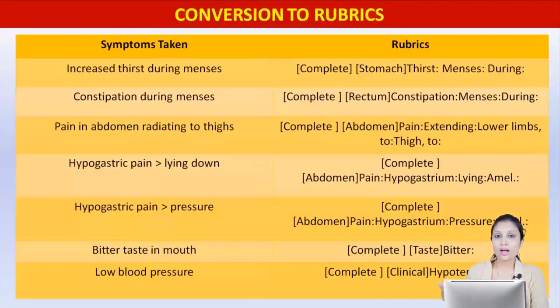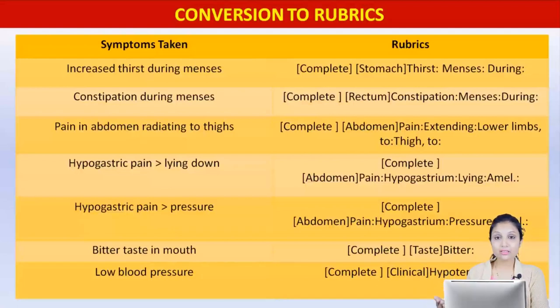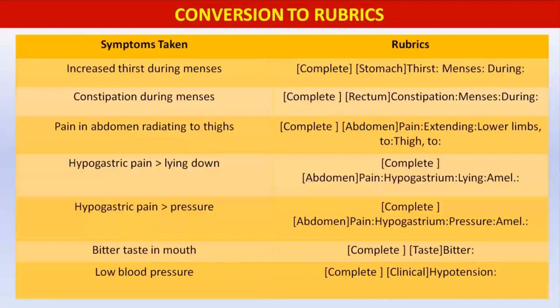Hypogastric pain better by lying down is seen in the abdomen chapter — we take the location of the pain and then find its modality: 'pain, hypogastric, lying, ameliorates.' In a similar fashion the next symptom is 'pain, hypogastric, pressure, ameliorates.' Then the bitter taste in the mouth — a straightforward symptom found in the taste chapter of the complete repertory as 'taste, bitter.' The final rubric is taken from the clinical chapter of the complete repertory: 'hypotension.' This is our final totality.